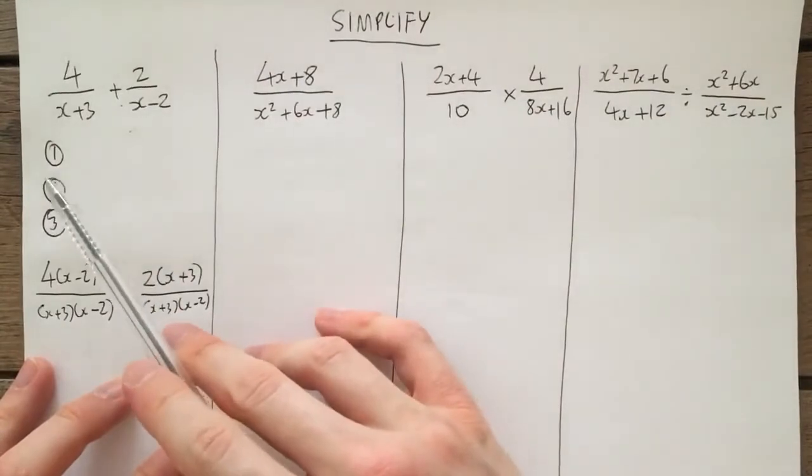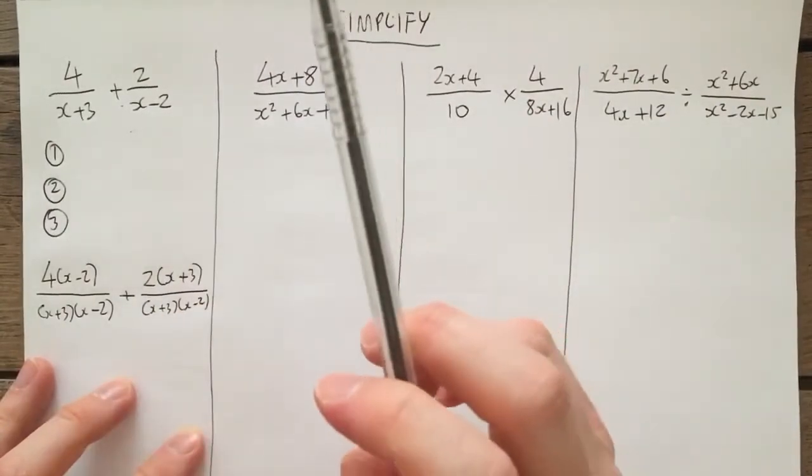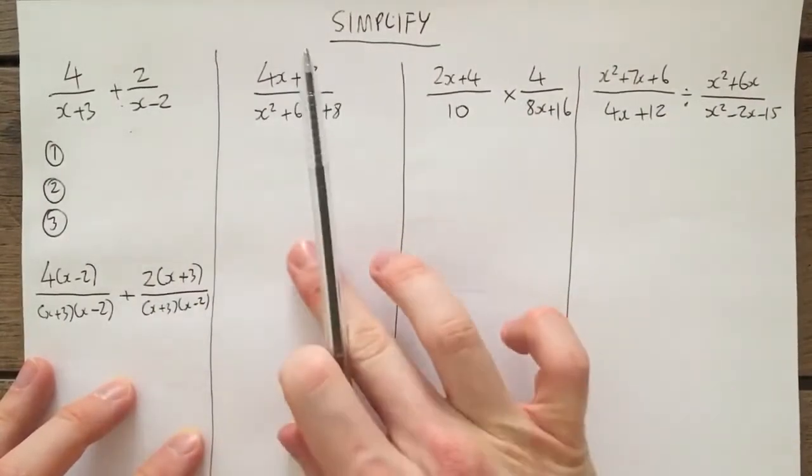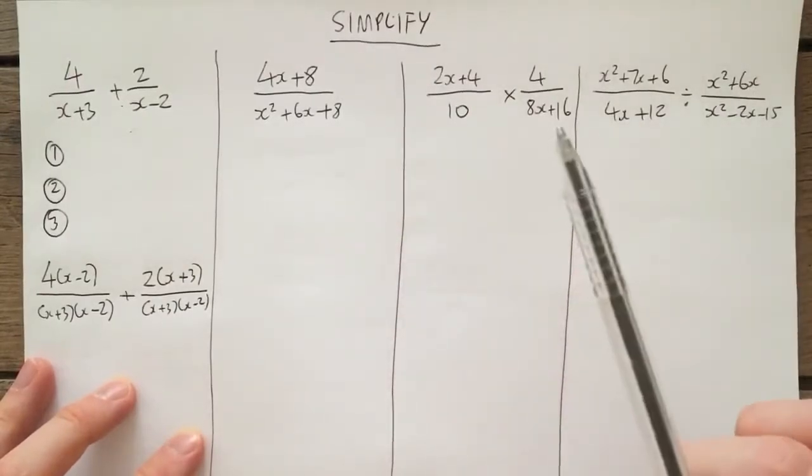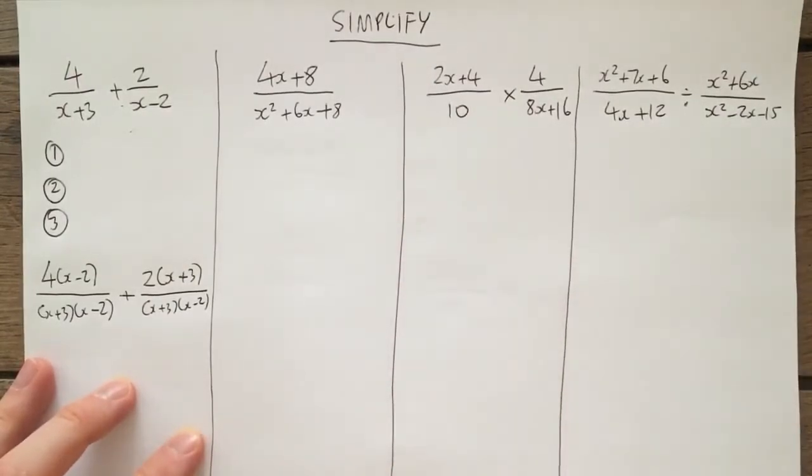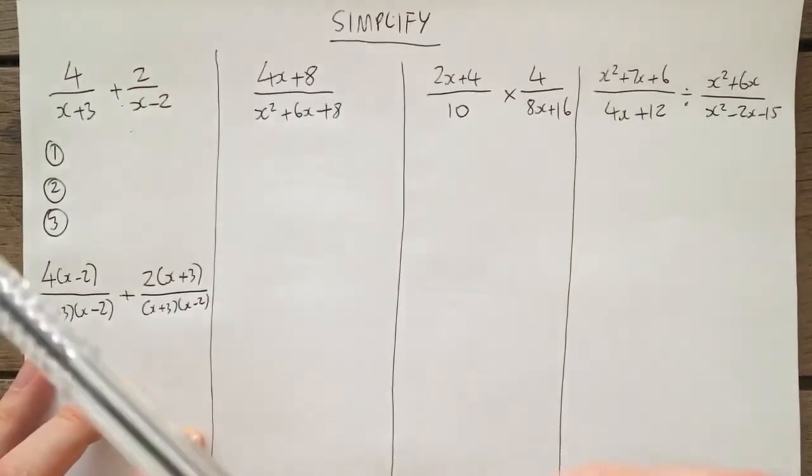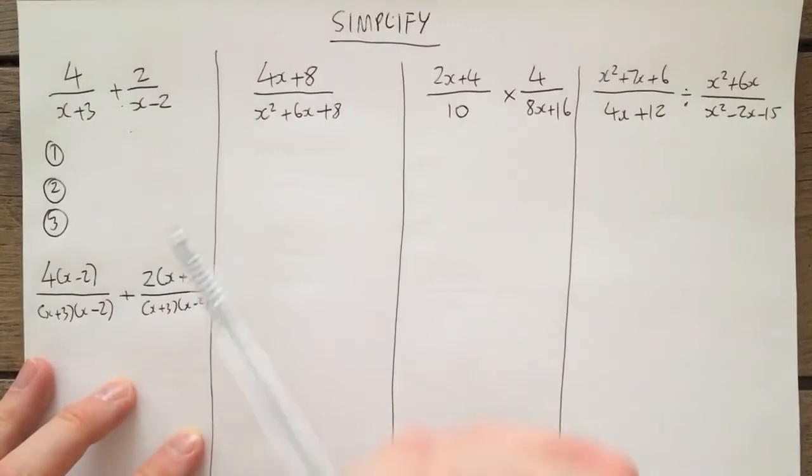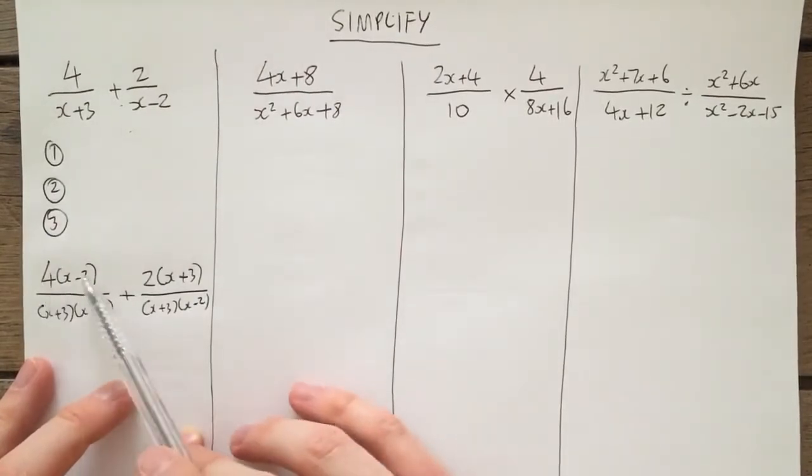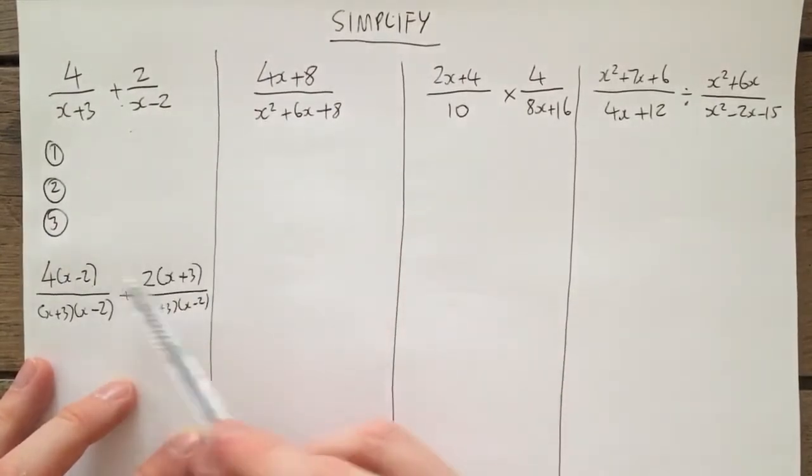Right, our second step is to add the denominators. Now, unlike this, this and this question where we try not to have to expand out and anything like that because we need to simplify before that. With adding and subtracting algebraic fractions, we must expand the numerators. Otherwise, we simply can't add them together.